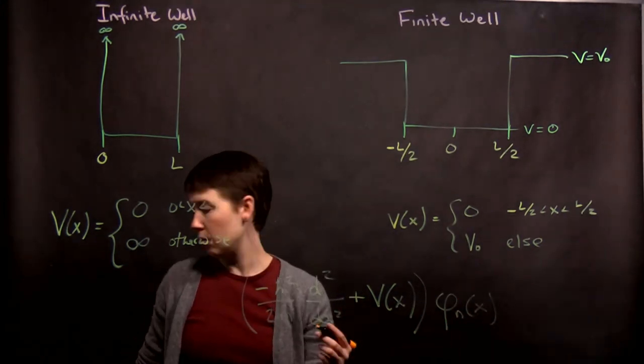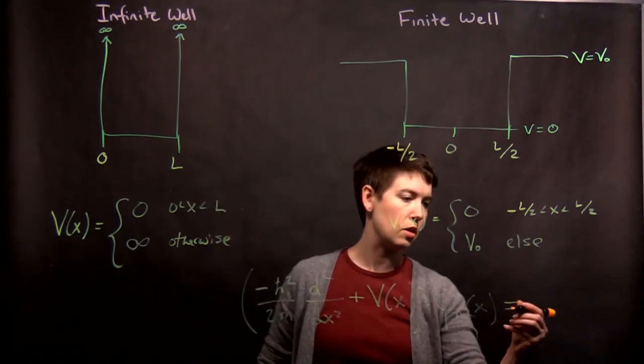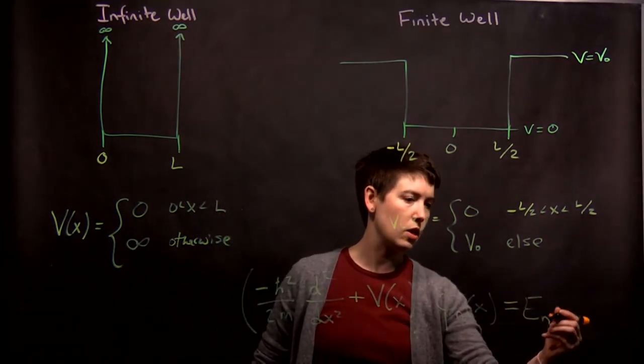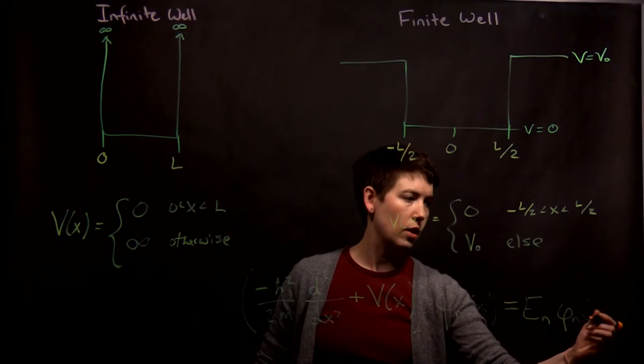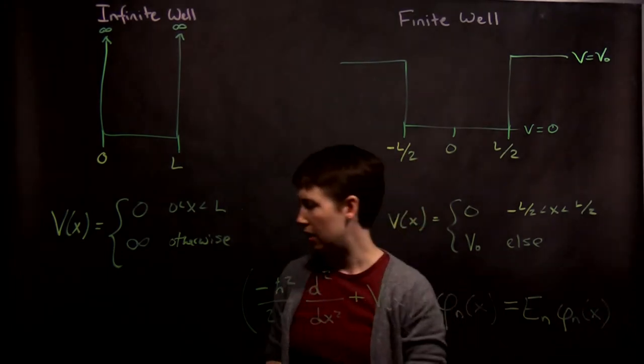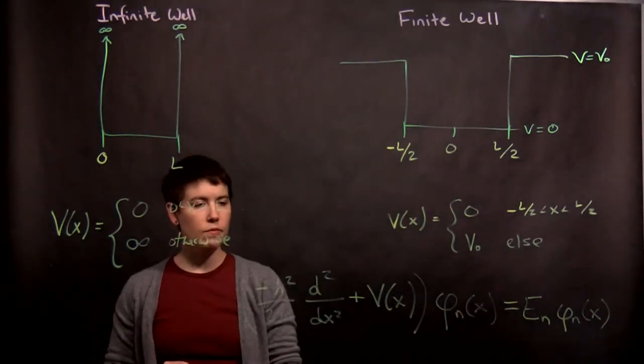The n represents our quantum number here because we expect these to be quantized energy eigenstates. And we have that. Okay.